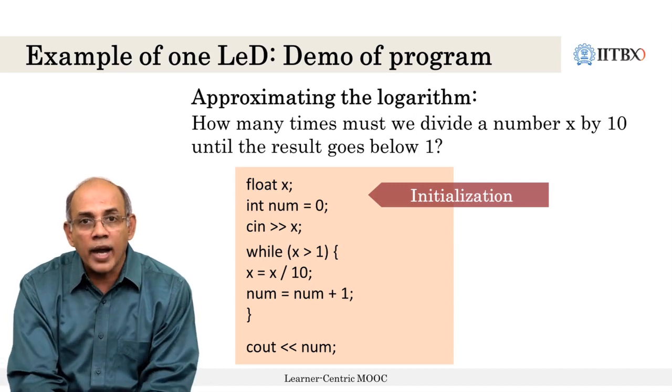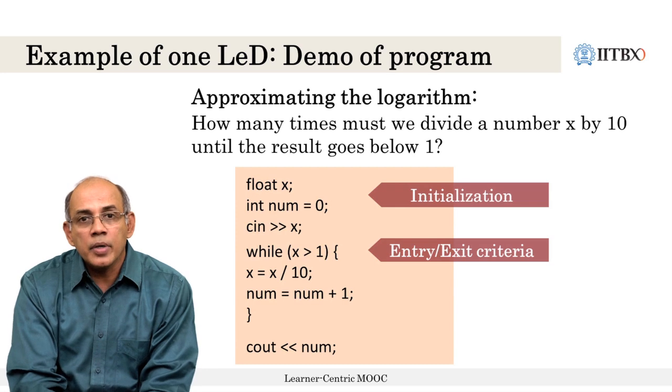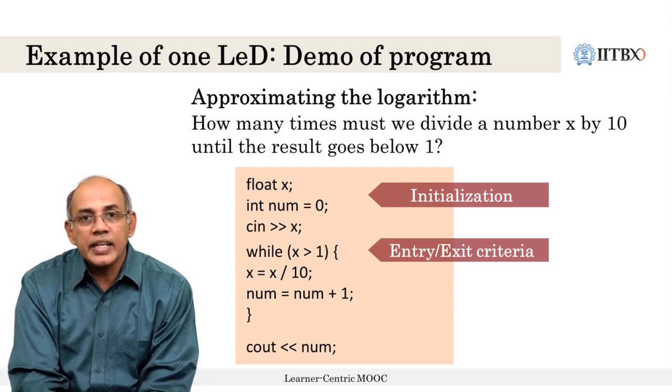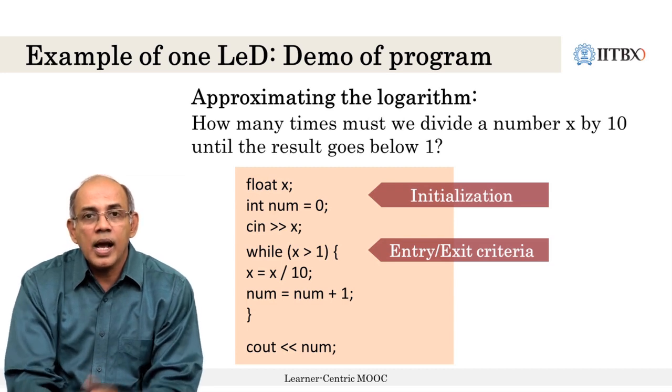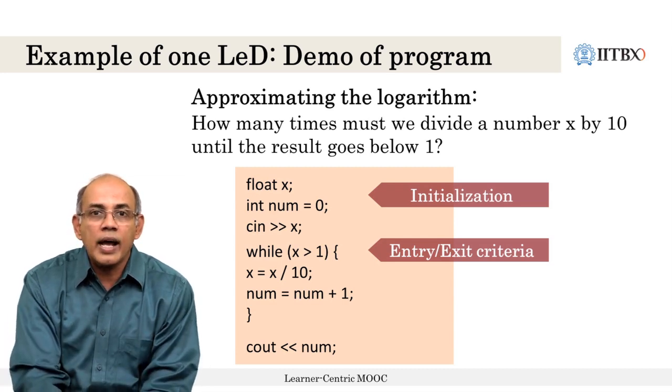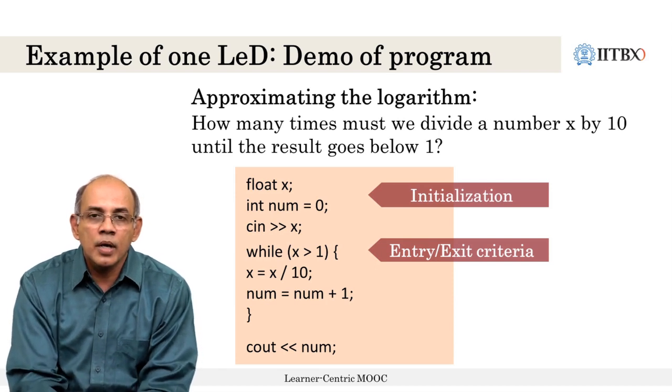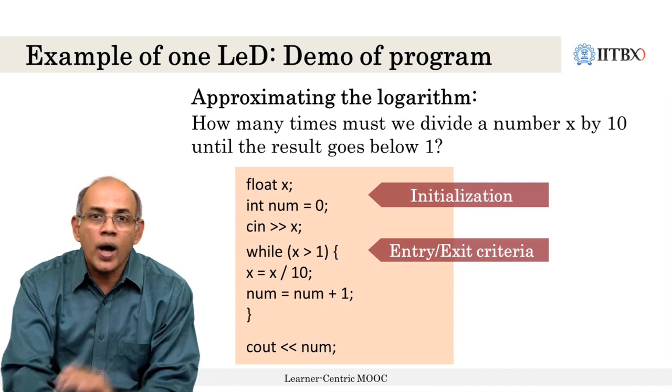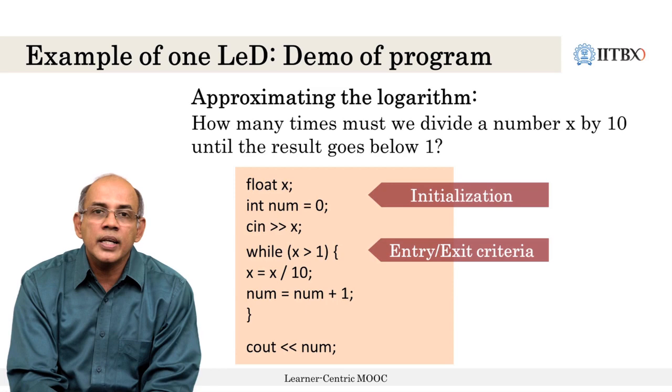Then there would be the entry and the exit criteria. Suppose we are using a while loop, we would be actually checking the entry criteria as the number being greater than 1 and the exit criteria as the current value of the number being less than 1. And then at the end, you would have the value of the logarithm being printed out. Now, this entire thing can form one LED in a series of LEDs on the topic of iteration.